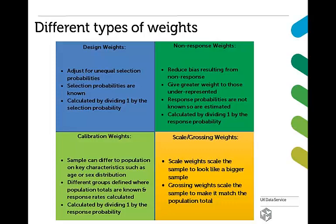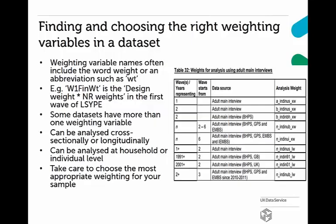The final type of weight is the scale or grossing weights. These weights scale the population up to make it represent a much larger sample, or in the case of grossing weights, to match the population total. Weights are included in many datasets as variables, and applied using the functions in statistical packages.